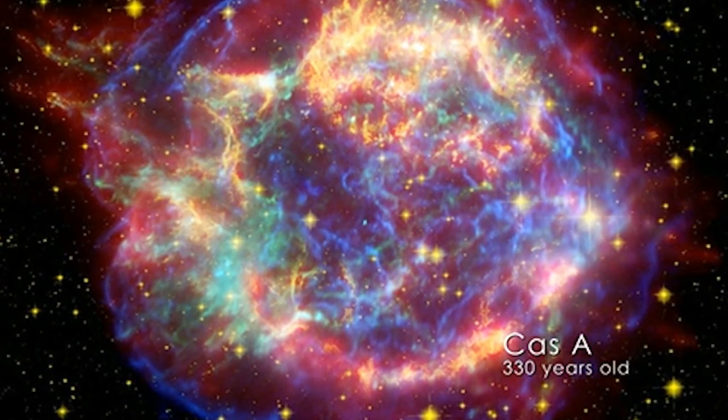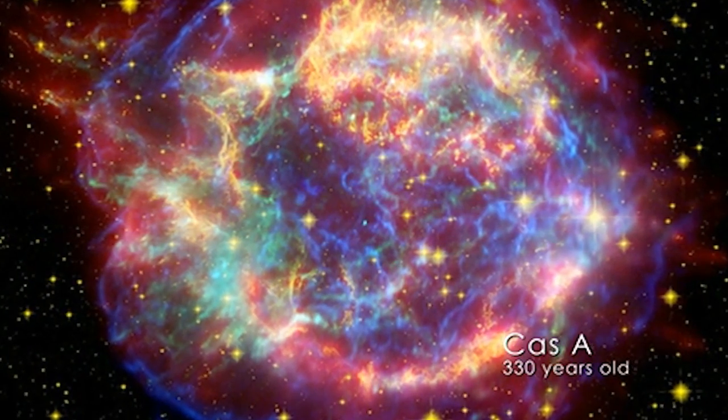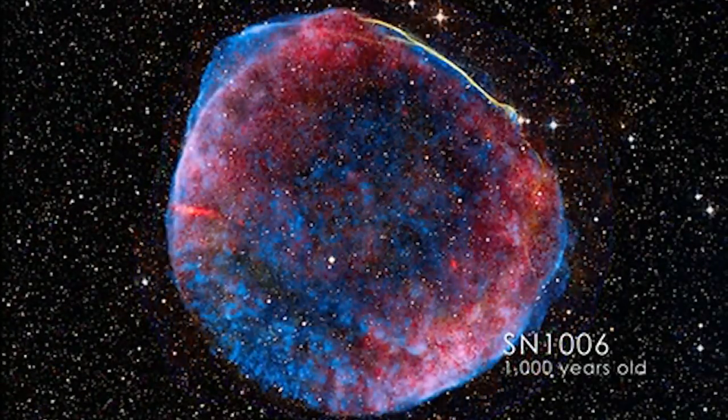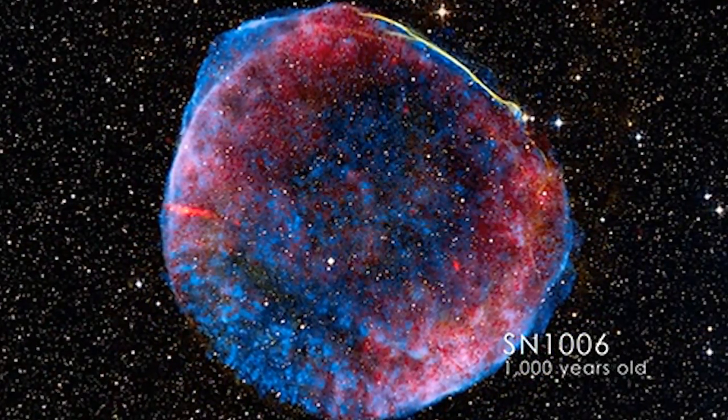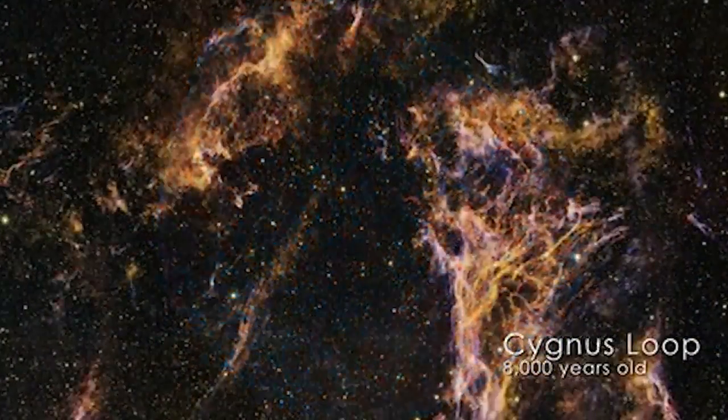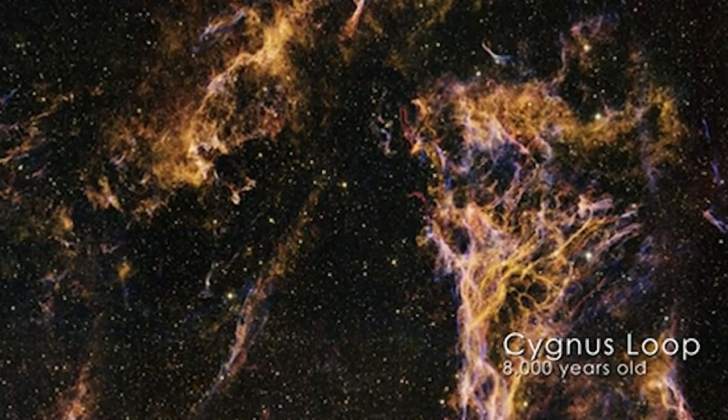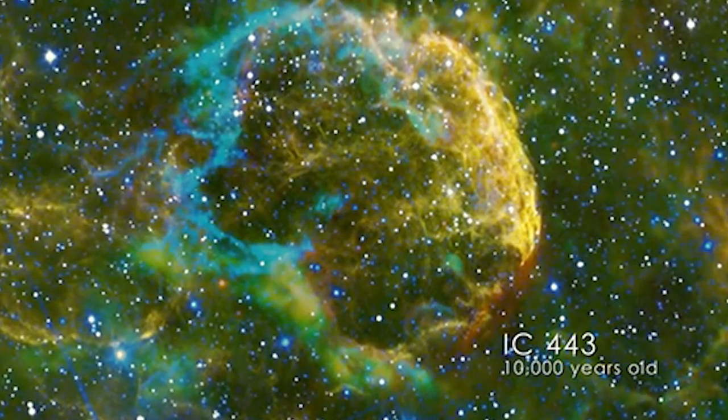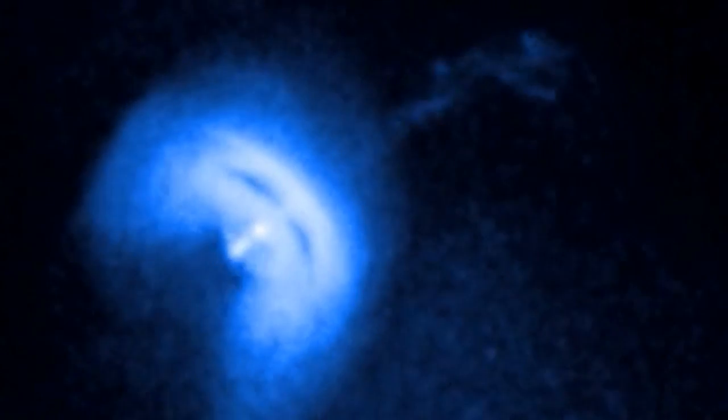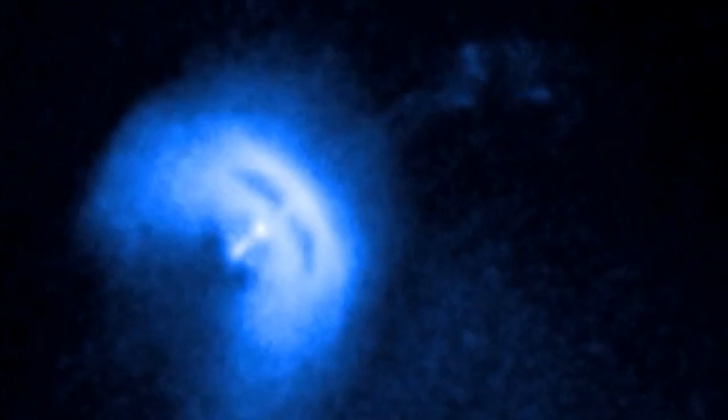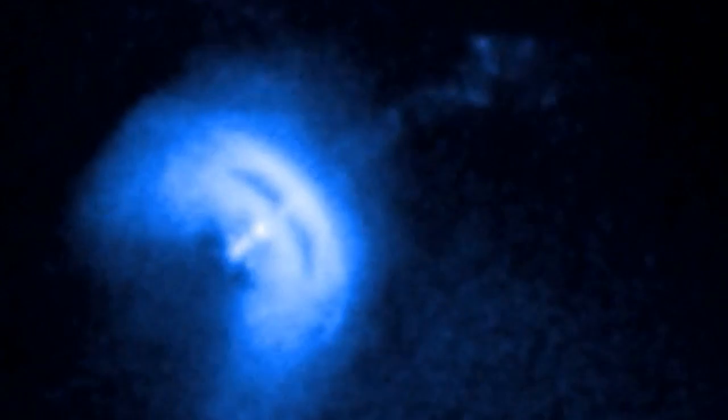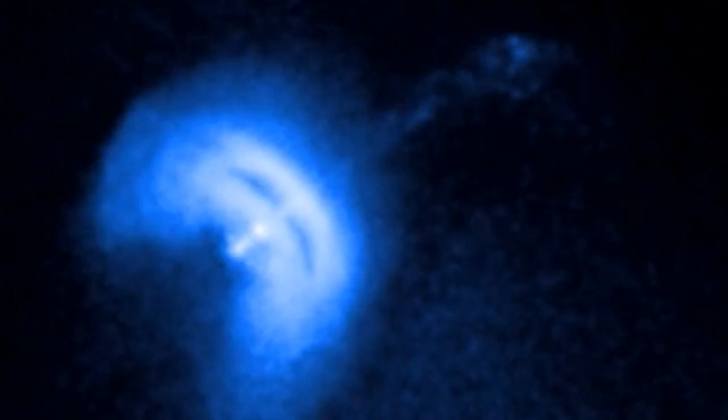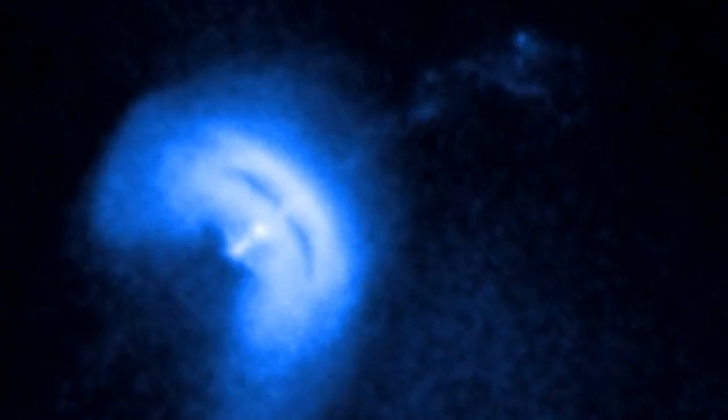A neutron star is a type of stellar remnant that can result from a gravitational collapse of a massive star during a type 2, type 1b, or type 1c supernova event. Such stars are composed almost entirely of neutrons, which are subatomic particles without net electrical charge and with slightly larger mass than protons. Neutron stars are very hot and are supported against further collapse by quantum degeneracy pressure due to the phenomenon described by the Pauli exclusion principle.